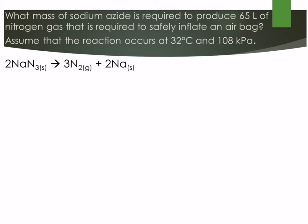In this second example it's asking us what mass of sodium azide is required. Sodium azide is NaN3, it's a special form of sodium nitrogen compound. It's required to produce 65 liters of nitrogen gas that is required to safely inflate an airbag. Assume the reaction occurs at 32 degrees Celsius and 108 kilopascals. We already have our balanced equation here.